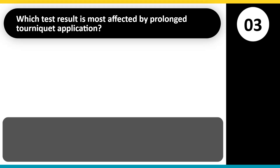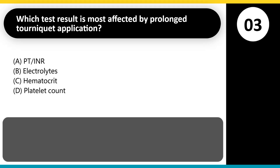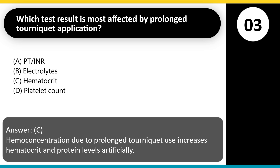Which test result is most affected by prolonged tourniquet application? A. PT/INR. B. Electrolytes. C. Hematocrit. D. Platelet count. Answer: C. Hemoconcentration due to prolonged tourniquet use increases hematocrit and protein levels artificially.